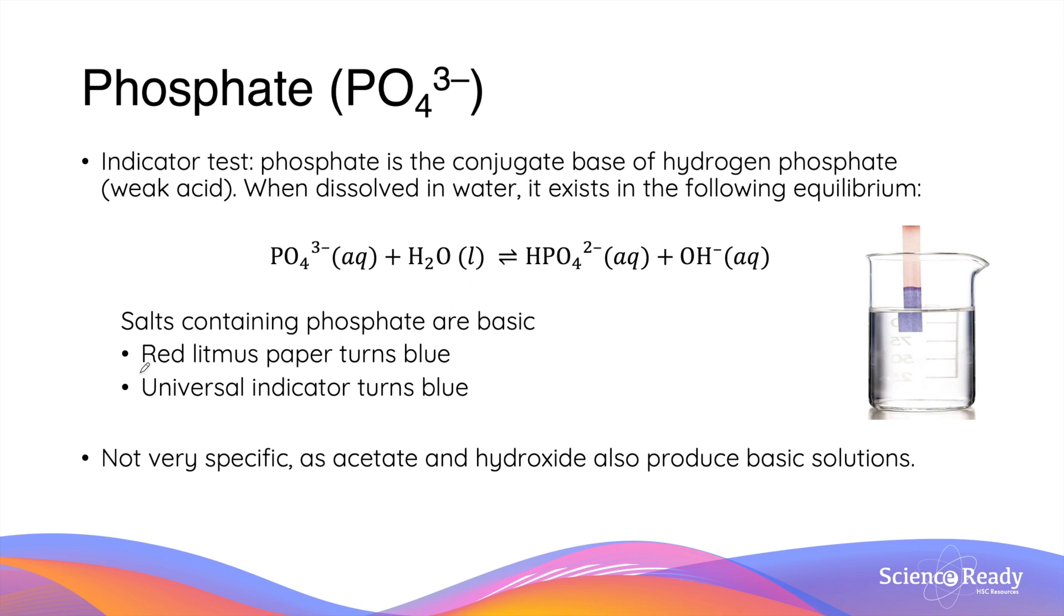Therefore, we can also use red litmus paper or universal indicator to identify the potential presence of phosphate. However, hopefully you realize that using an indicator is not a very specific and effective test, as acetate and hydroxyl ions will also produce basic solutions and give you exactly the same observations.